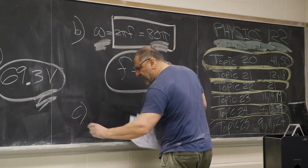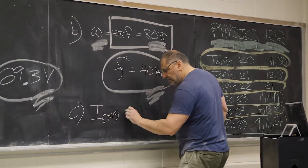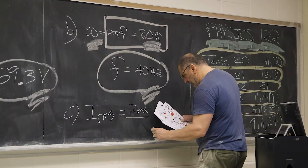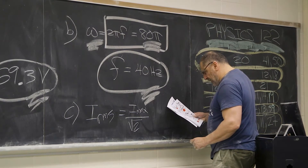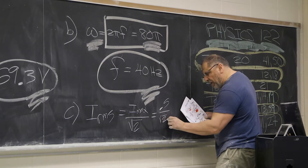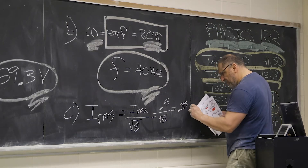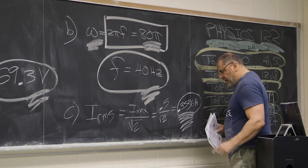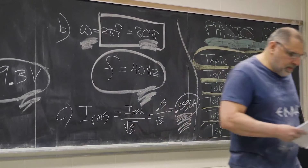What's the IRMS? IRMS equals I-max divided by the square root of 2. The I-max is 0.5 — they told us that. So divide 0.5 by the square root of 2. That's part C. Now part D.